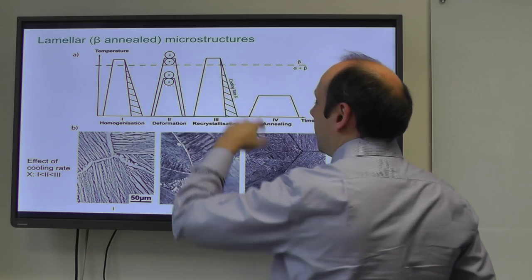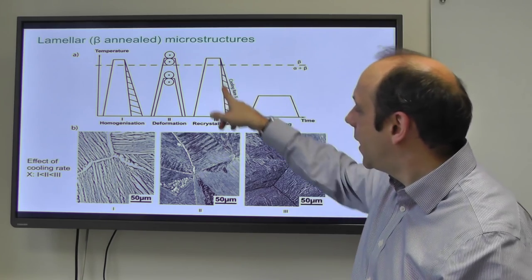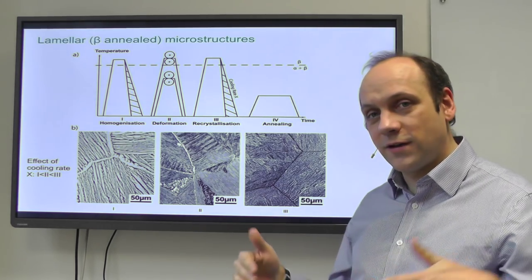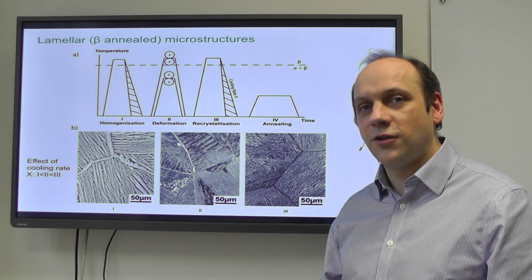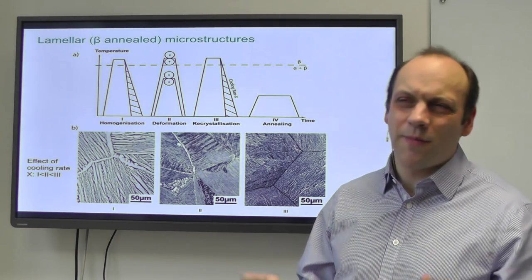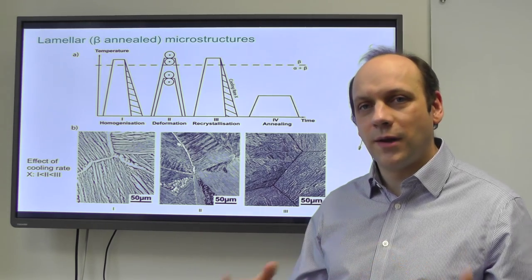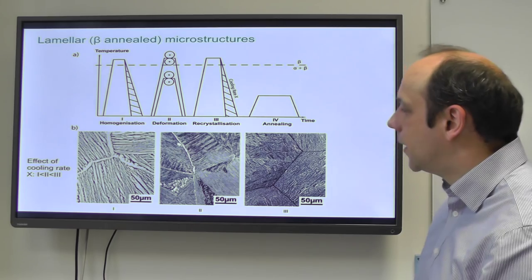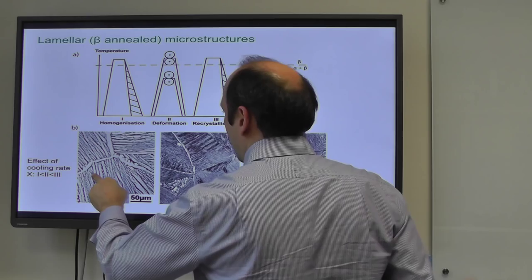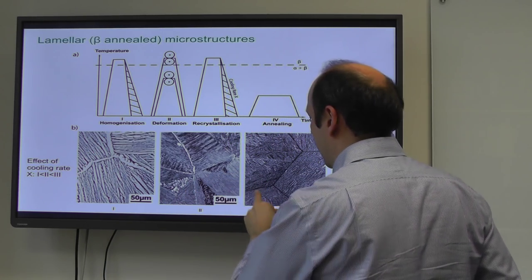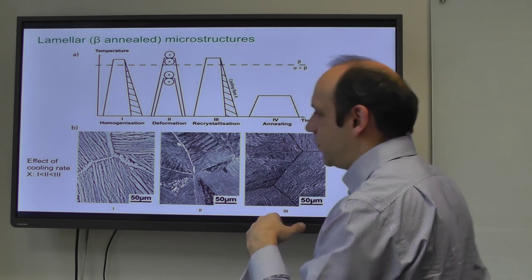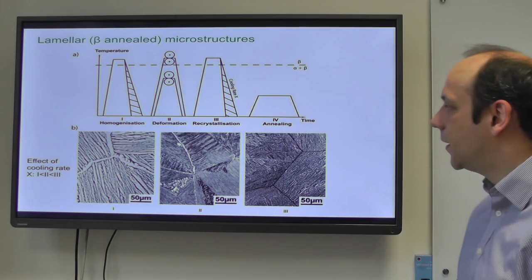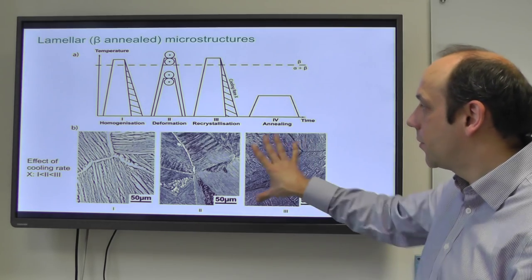The last step sets the microstructure: you recrystallize above the beta transus, and then on cooling, the cooling rate determines the length scale of alpha - fast cooling gives fine-scale alpha, slow cooling gives coarser alpha. This is controlled by the rate of diffusion of the beta-stabilizing species; the alpha is controlled by molybdenum or vanadium rejection from the growing plates, analogous to carbon control in pearlite in steels. You may then anneal to relieve any stresses from cooling and allow final partitioning of elements, but the microstructure is set by that cool.